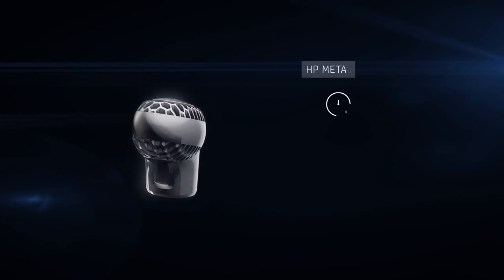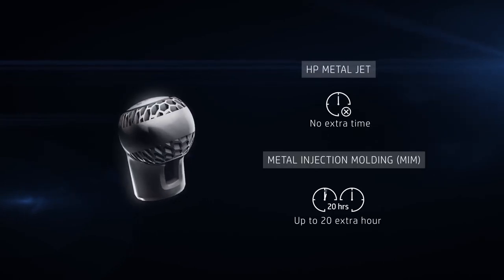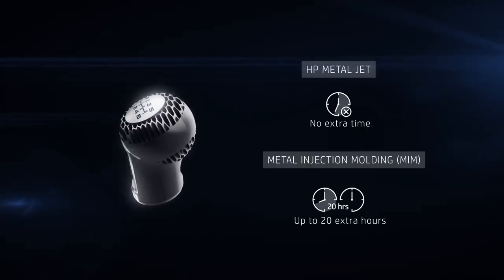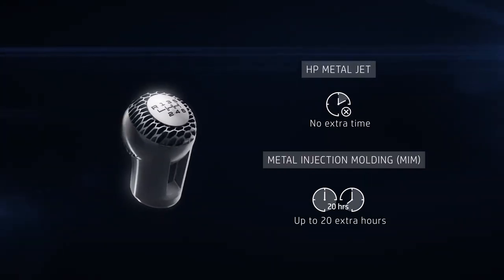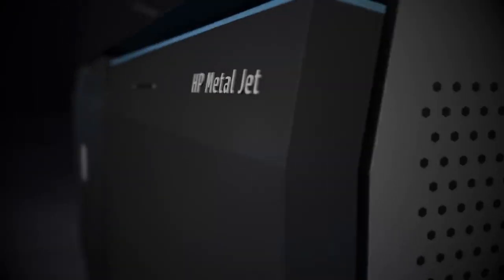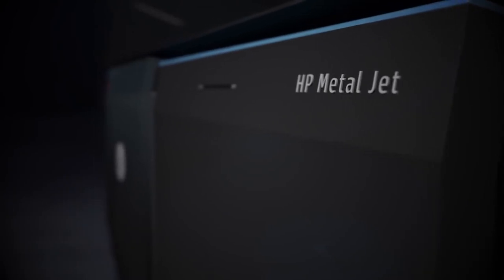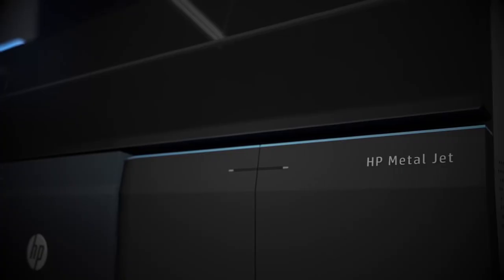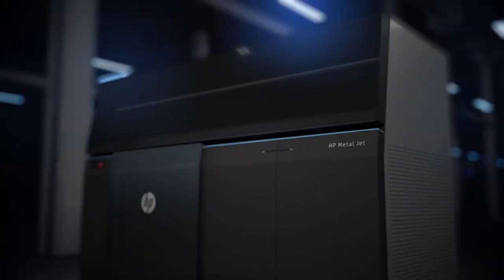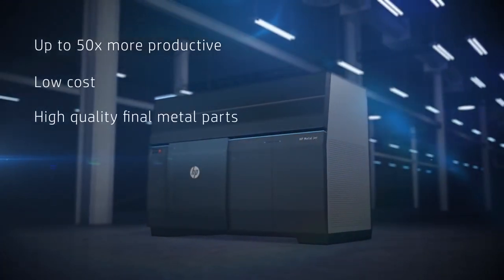Compared to metal injection molding, a time-consuming de-binding process is unnecessary with HP MetalJet, taking up to 20 hours out of the workflow. Now you can raise your productivity to new levels and produce complex parts that were simply not possible before in cost-effective high-volume runs.